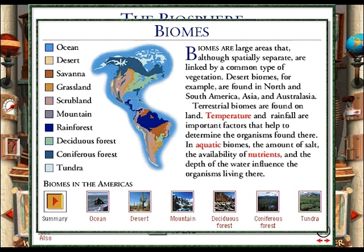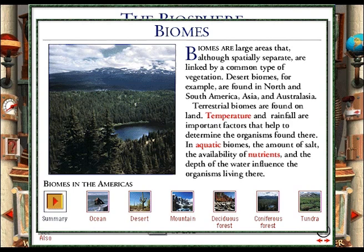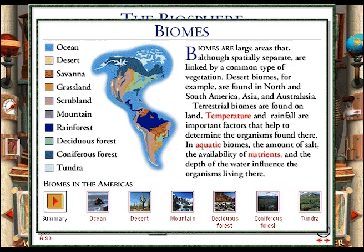North, Central and South America contain every land and water biome known, including ocean surrounding the continents, desert in Arizona, mountains in Canada, deciduous forest in New Hampshire, coniferous forest in Washington state, and tundra in Alaska.